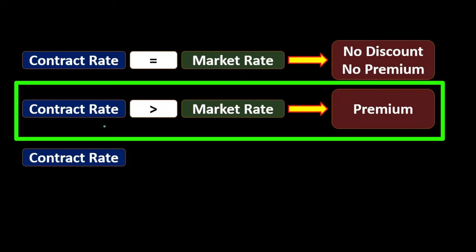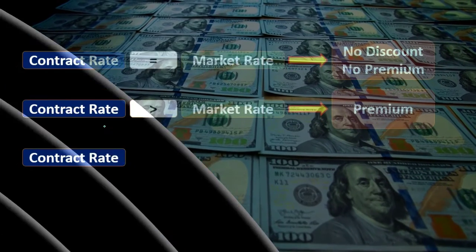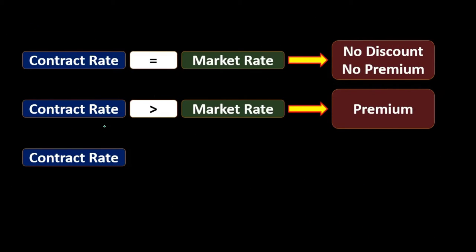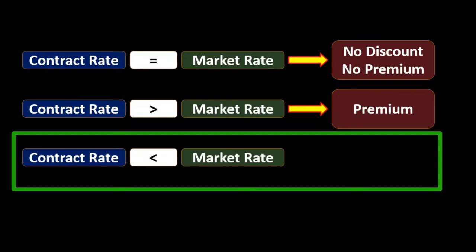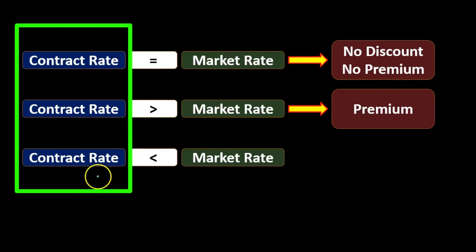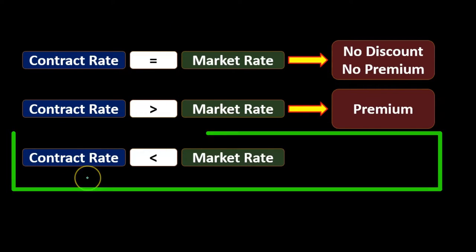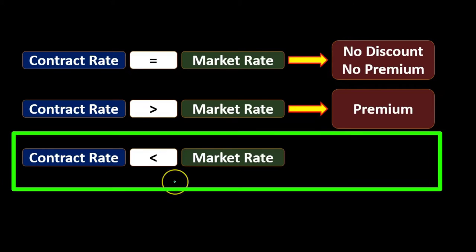What we can do is sell the bond for something over one hundred thousand — issue it at a premium. We take more than a hundred thousand now, make up the difference by paying more interest in the meantime, and then give back the hundred thousand at the end. The third possibility is that the contract rate is less than the market rate. The contract rate is printed on the bond; the market rate is what we determine based on what other similar securities are currently doing.